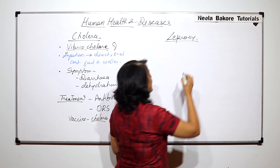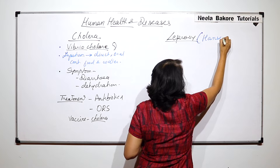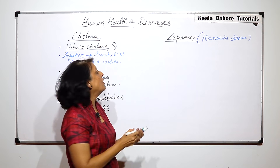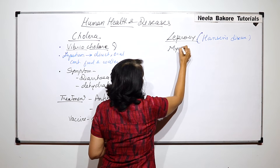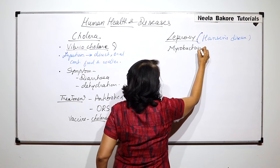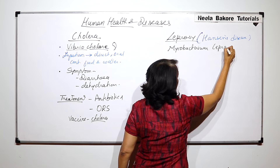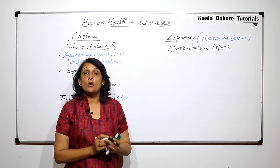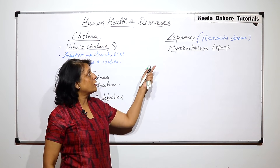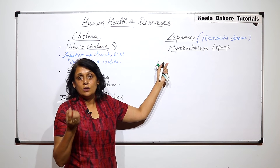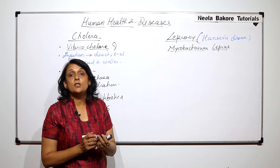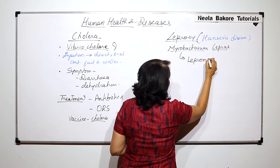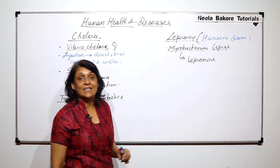Leprosy is known as Hansen's disease. The bacterium which causes this disease is Mycobacterium leprae — that is the causative bacteria. The problem in leprosy is the toxin produced by the bacterium, which is called lepromin. Lepromin is a histolytic substance.